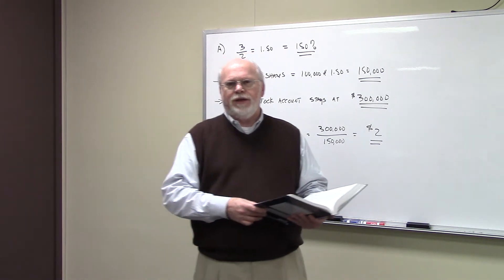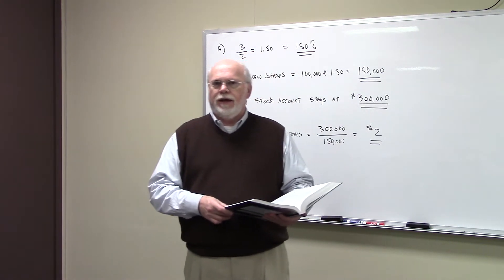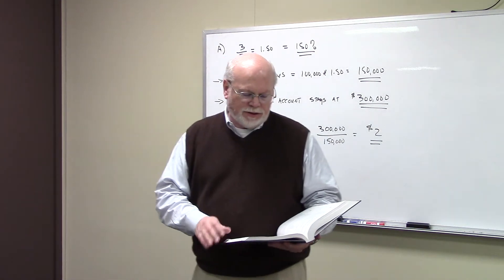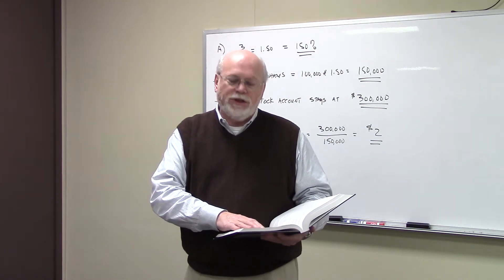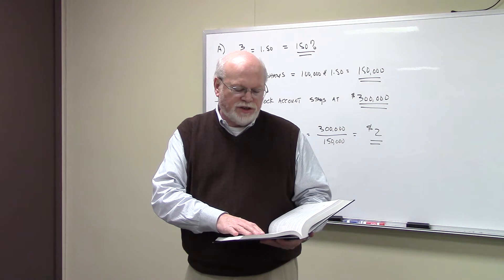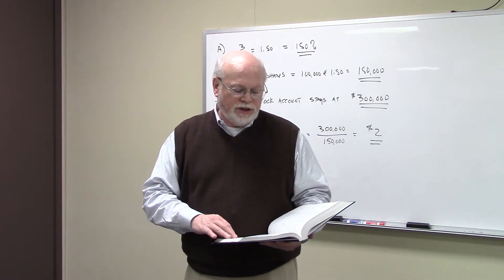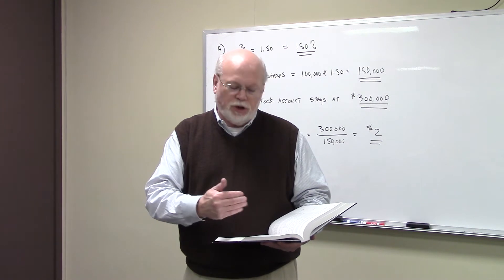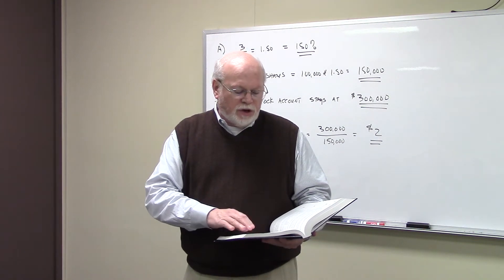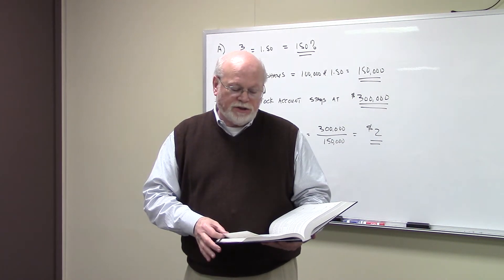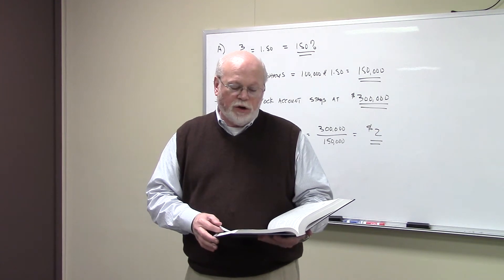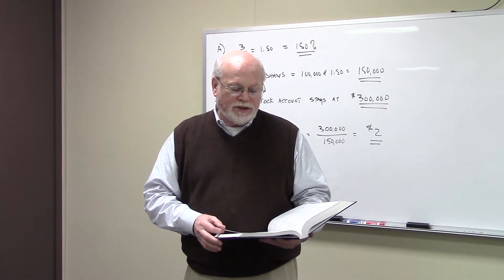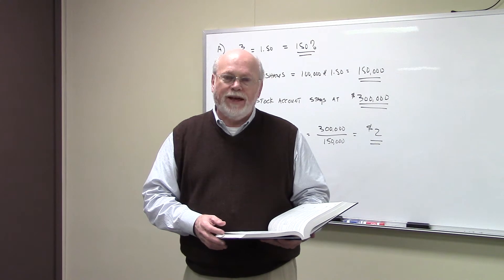And of course, we're looking for the accounting implications of these kinds of things. Now, the problem reads this way. It says Mammoth Corporation is considering a three-for-two stock split. It currently has the stockholder's equity position shown below. The current stock price is $120 a share. The most recent period's earnings available for common stock are included in retained earnings.